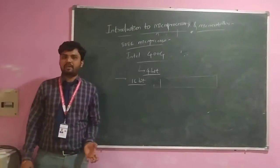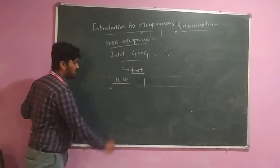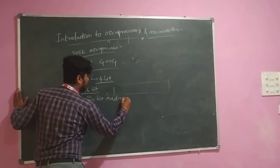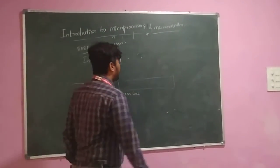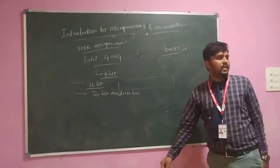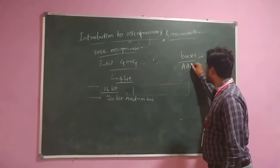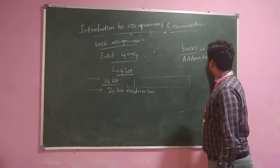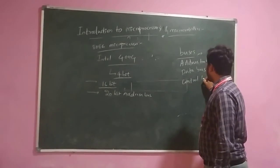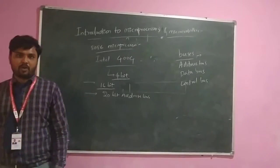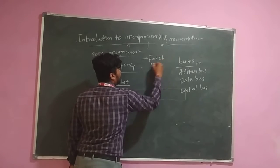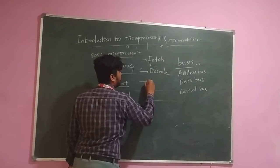Next, the specifications of the 8086 microprocessor. It has a 20-bit address bus. In a microprocessor, we have three buses — one is the address bus, second is the data bus, and the third is the control bus. The processor performs operations in three steps: first is fetch, next is decode, and the last is execute.